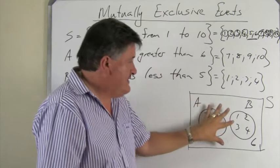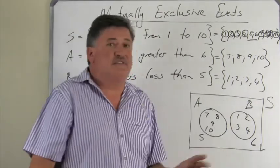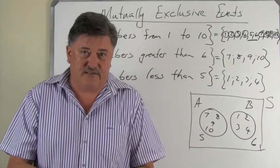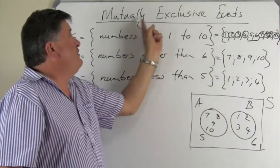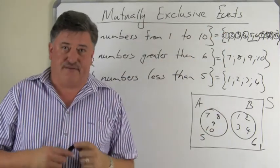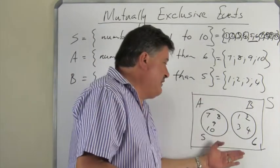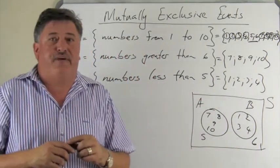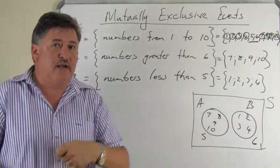Now, this particular example where there's no outcomes in both events, these two events are called mutually exclusive. So, what is extremely important about the fact that two events are mutually exclusive? There are no outcomes in both.